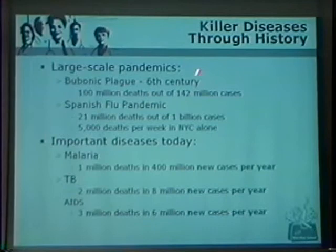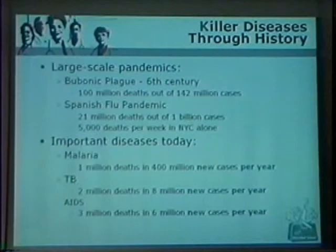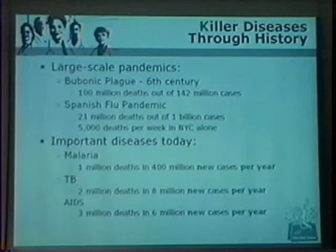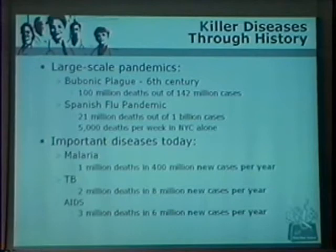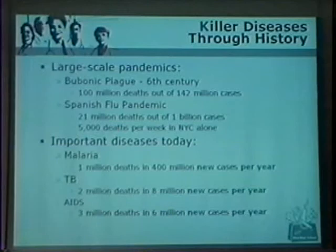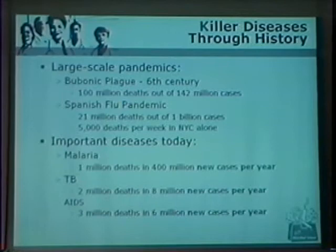There was the famous bubonic plague going back to the sixth century — probably plagues before this, but these are the first recorded ones. We're talking about 100 million deaths and 142 million people affected by bubonic plague. Look at the Spanish flu pandemic in the early 1900s — 21 million deaths, and in New York City alone, 5,000 people died of the flu every single week. I would ask how many of you get the flu vaccine to prevent this from occurring again? In the general population it's under 65%, and yet the flu vaccine is free, with few side effects, and available pretty much everywhere.